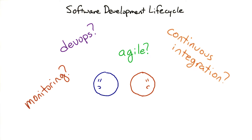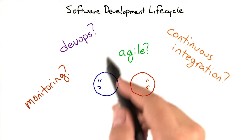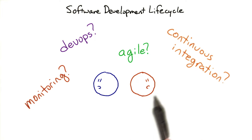How does DevOps fit into the world of software development and relate to things like agile development and continuous integration that have been around for a while? Agile software development is based on iterative development, where requirements and solutions evolve via collaboration between self-organizing cross-functional teams. The term was coined in 2001 when the Agile Manifesto was formulated, so it's been around for a bit longer than DevOps.